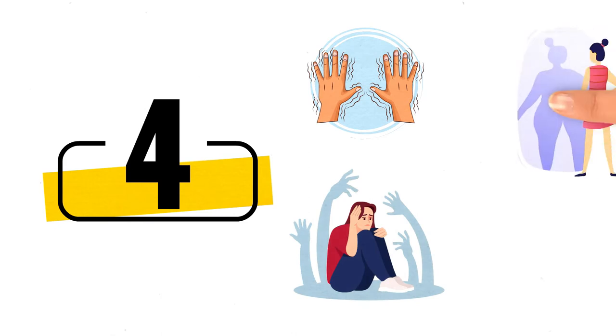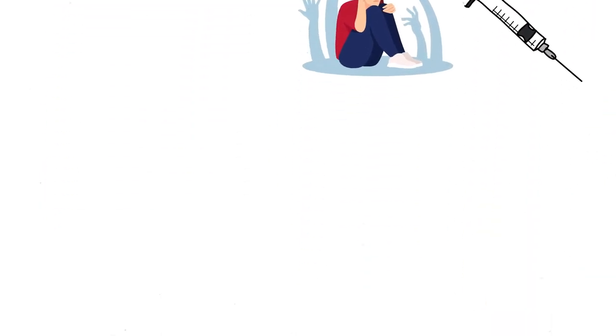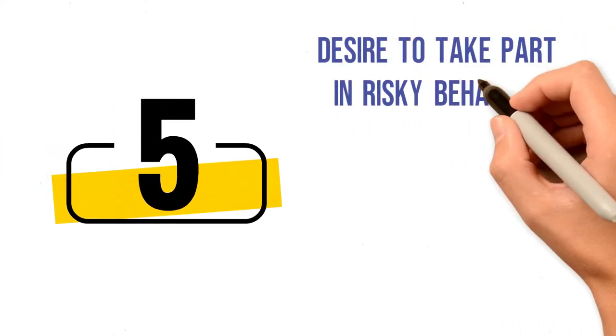Number four: Aside from MDD and schizophrenia, anhedonia can result from other conditions or illnesses such as Parkinson's disease, psychosis, anorexia nervosa, and substance abuse-related disorders. Number five: Anhedonia may have a role in sparking a desire to take part in risky behaviors, such as bungee jumping or skydiving.